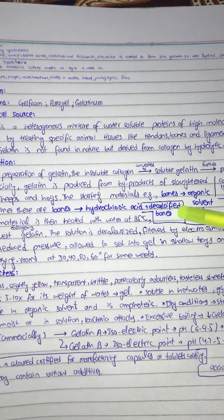The material is then heated with water at 85 degrees Celsius, at high temperature, to convert collagen into gelatin.